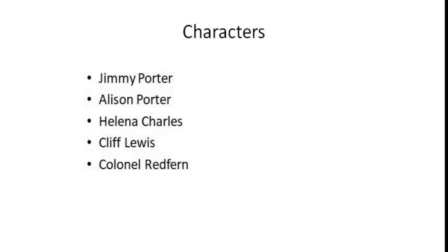The next character is Helena Charles. Helena Charles is Alison's best friend. She is also from an upper class family. She is responsible for the conflict between Jimmy and Alison. But ultimately, her morality leads her to leave their life.